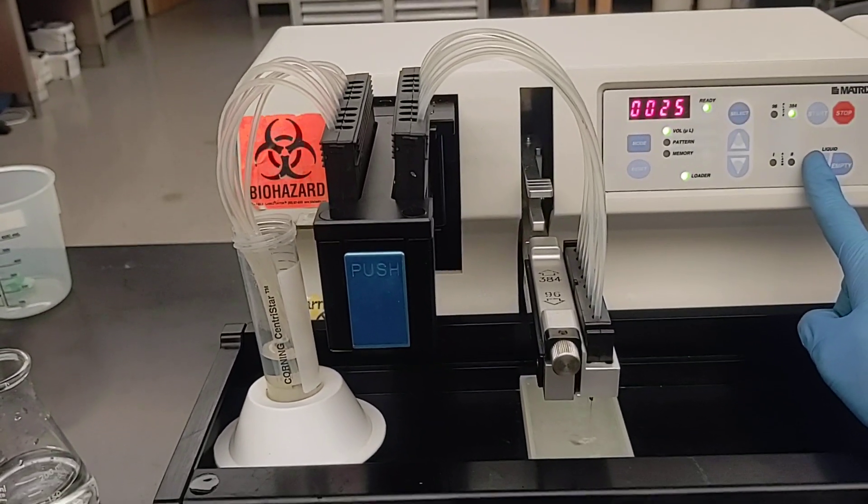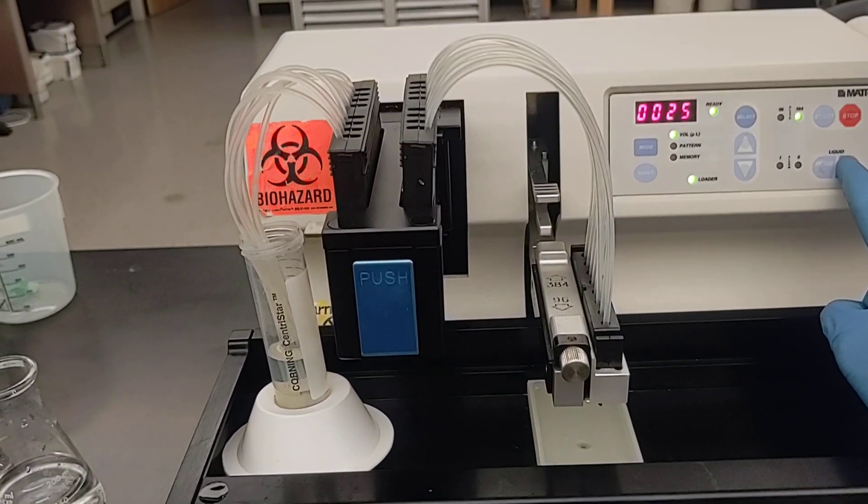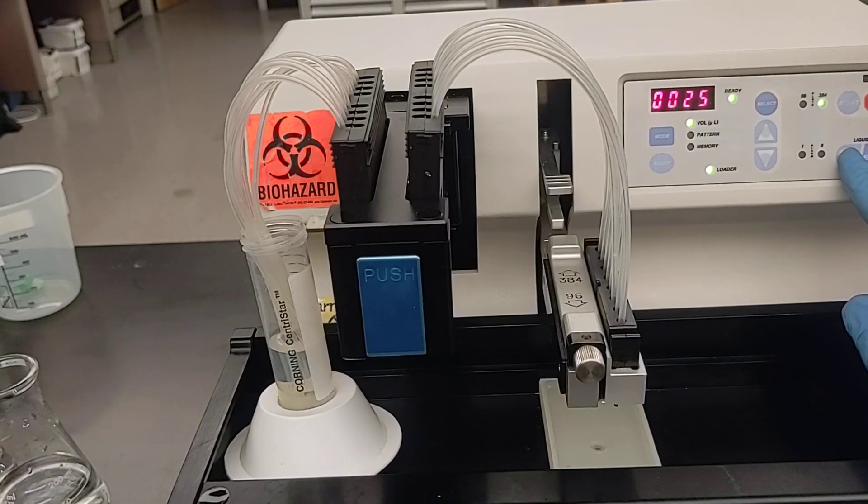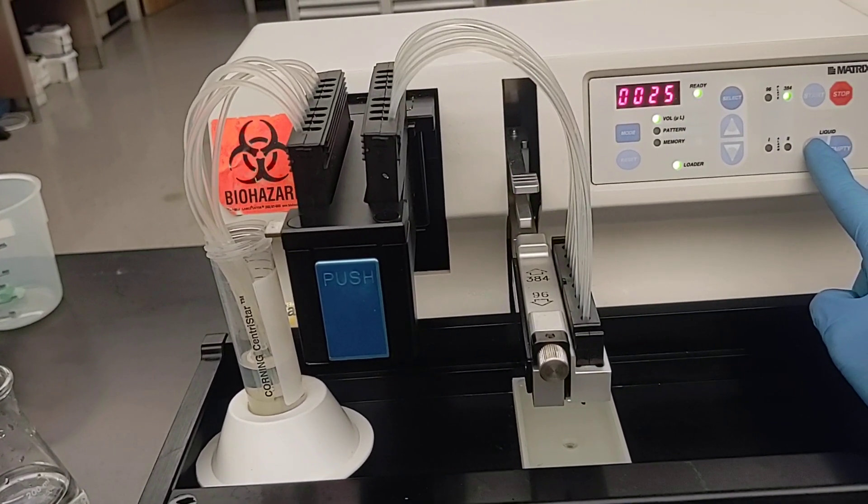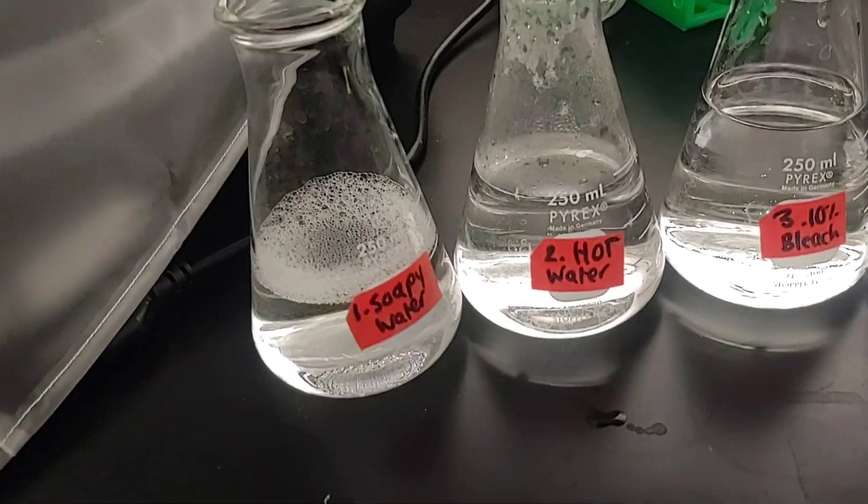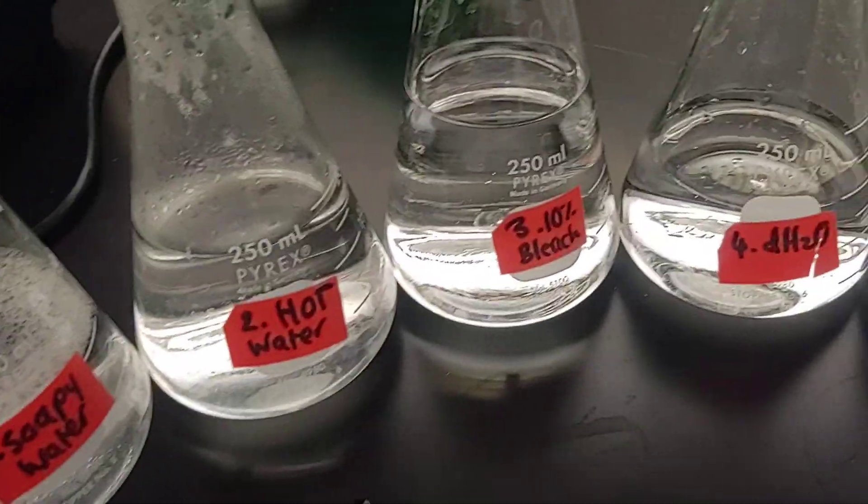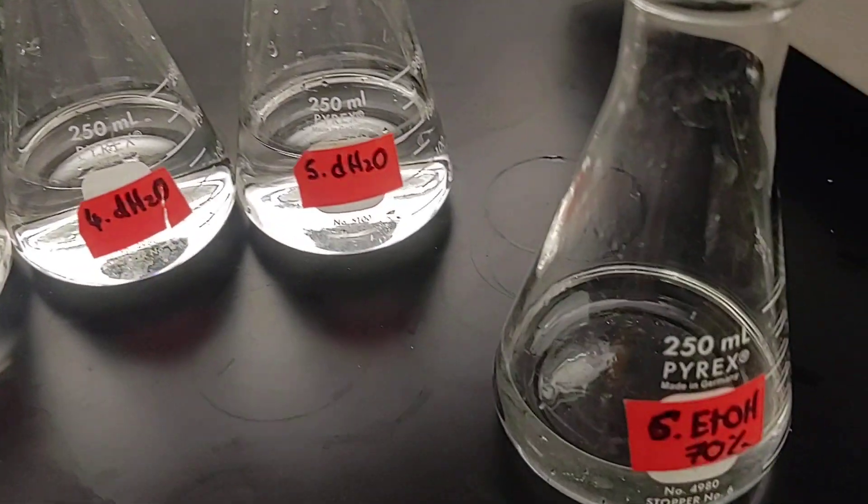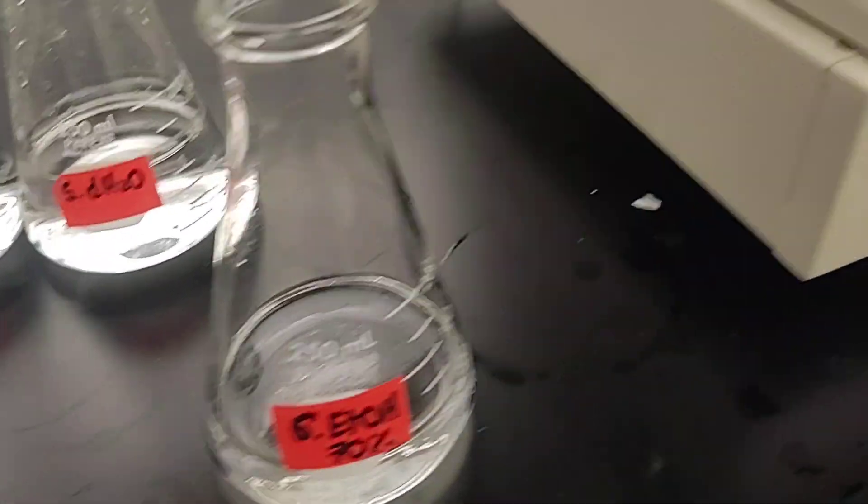And if you're washing, you can do a prime and then empty and prime three times with a sequence of different solutions to wash your tubing. We've got soapy water, hot water, bleach water, and then ethanol.